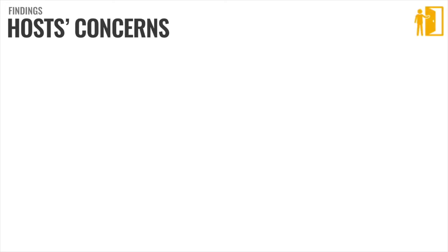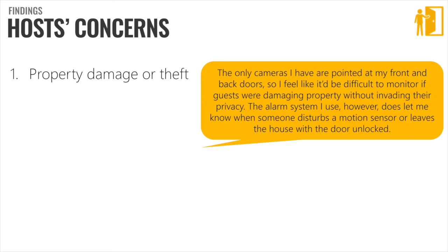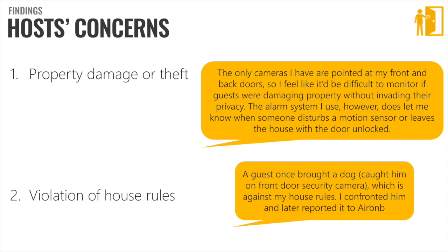Looking at the host open-ended responses, we found that hosts were concerned about two main things. One was property damage or theft. One participant wrote: 'The only cameras I have are pointed at my front and back doors — I feel like it would be difficult to monitor if guests were damaging properties without invading their privacy.' This participant acknowledged the tension between monitoring for damage and respecting guest privacy indoors. The second concern was violating house rules — almost 50% of participants thought this is likely or extremely likely to happen, and participants expressed using smart devices to address this concern. One host shared: 'A guest once brought a dog — caught him on front door security camera, which is against my house rule. I confronted him and later reported to Airbnb.'